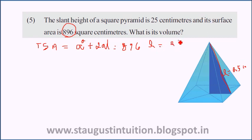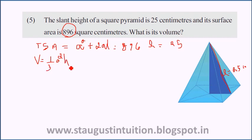Using this relation, we need to find the volume. Volume is equal to one-third a squared h. So we need to find both a and h.